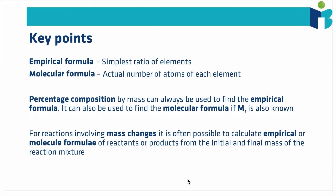Key takeaways: the empirical formula is the simplest ratio of elements, while the molecular formula tells you the actual number of atoms of each element in a compound. Percentage composition by mass can always be used to find the empirical formula — divide percentages by atomic masses to get the element ratios. If we also know the molecular mass, we can determine the molecular formula by seeing how many times we need to scale up the empirical formula mass. For reactions involving mass changes, converting mass changes to moles lets us determine empirical or molecular formulas of reactants or products.